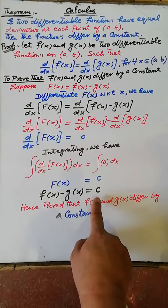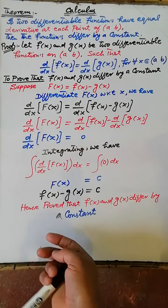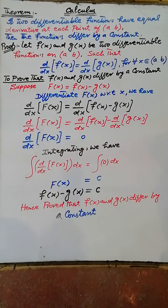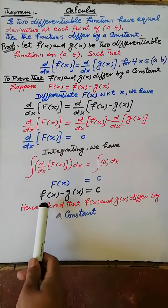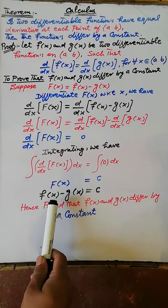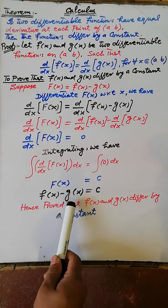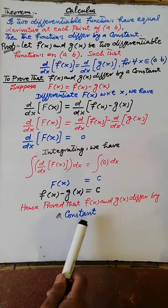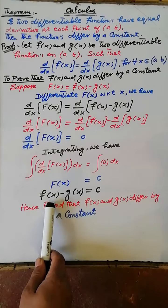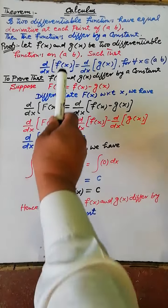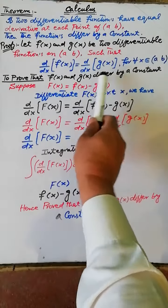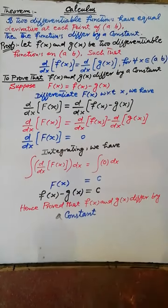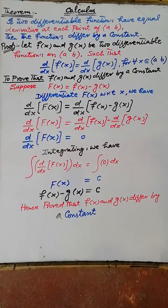Therefore f(x) minus g(x) equals c. Hence it is proved that the difference of the functions f(x) and g(x) is a constant, because the derivatives of f(x) and g(x) on the same interval are equal.